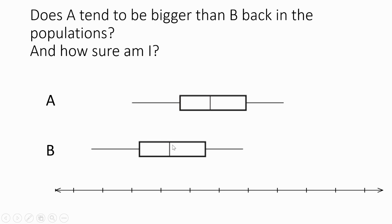If we do it the other way around, you can see that B's median is lower than the lower quartile for A. In other words, half of B is lower than three quarters of A. So we can say that three quarters of A is bigger than half of B, which leads us to be able to make the same conclusion that A tends to be bigger than B.